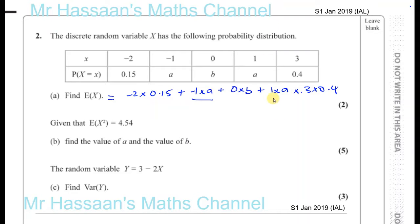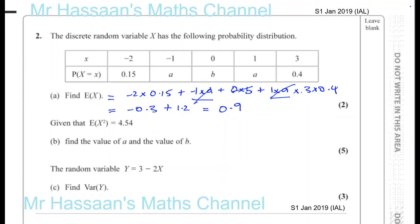You'll notice that minus A plus A disappears, and 0 times B disappears. So you're left with just minus 2 times 0.15, which gives minus 0.3, plus 3 times 0.4 which is 1.2. So 1.2 minus 0.3 equals 0.9 — the expected value of X is 0.9. That's part A.